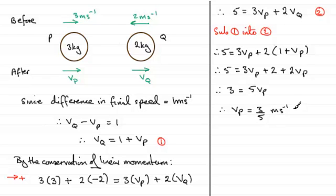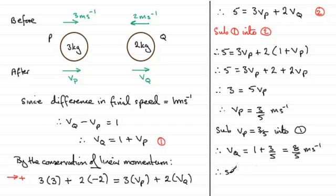And all we've got to do now is just substitute this back into equation 1 to get VQ. So if we just say sub VP equals 3 fifths into equation 1. So we therefore have that VQ equals 1 plus VP. So that's 1 plus 3 fifths. And 1 plus 3 fifths is going to give us 8 fifths meters per second. So therefore we've just got to reply back to the question.